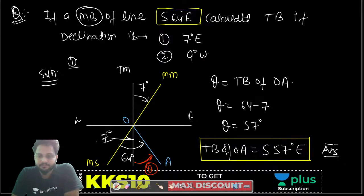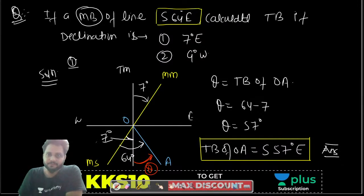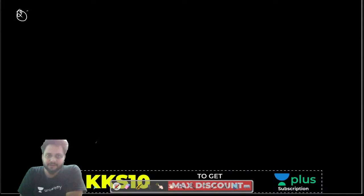I hope this point is clear to all of you. If anyone has any doubt, you can ask. Let's solve the second part. Declination provided is 9 degrees west.